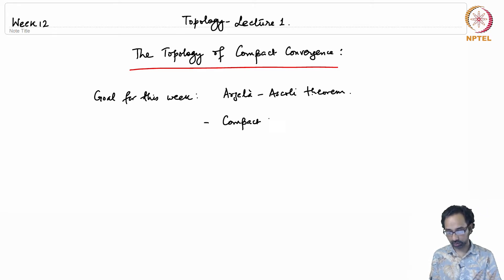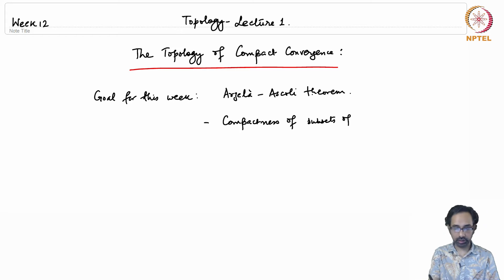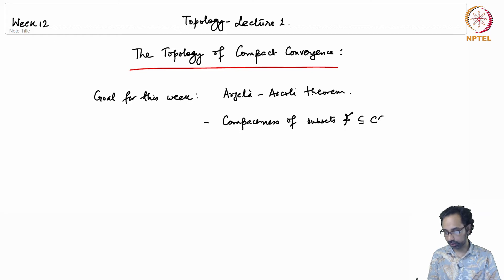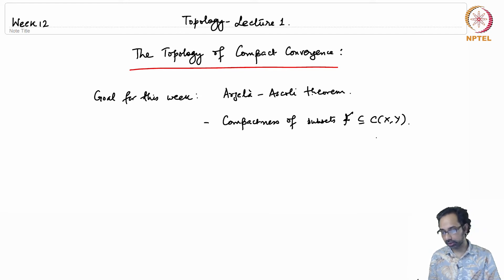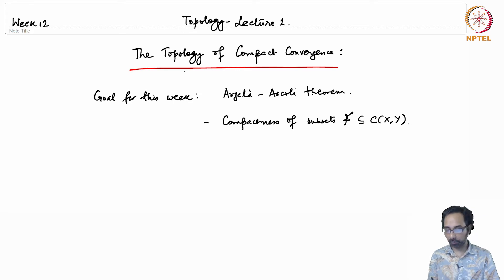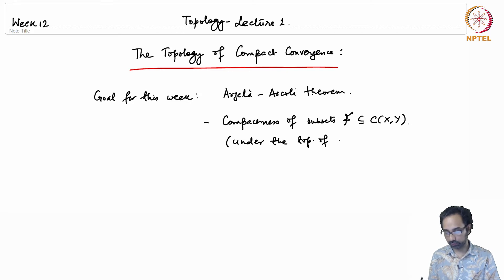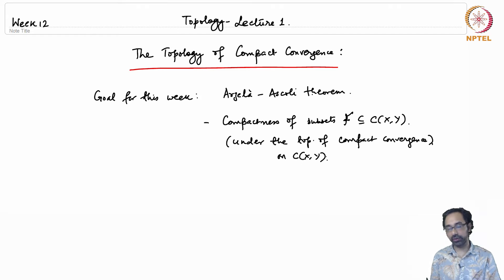The Arzelà-Ascoli theorem is about compactness of subsets of the space of continuous functions from X to Y — let's call this C(X,Y). We will specify the topology, which is the topology of compact convergence.